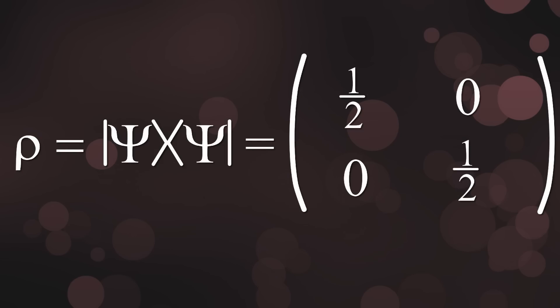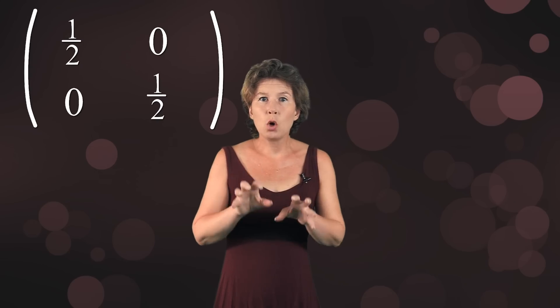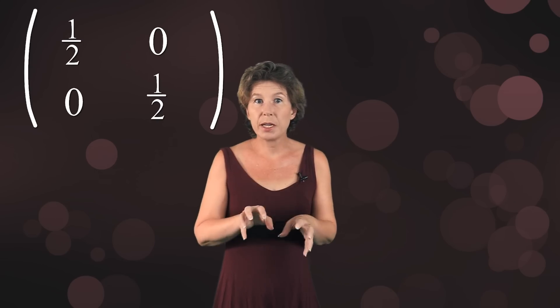I know this looks utterly unremarkable, it's just a matrix with one over twos on the diagonal. But what's interesting about it is that there is no wavefunction that will give you this density matrix.